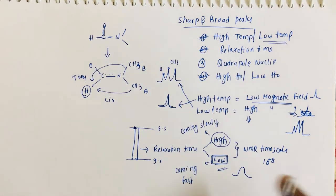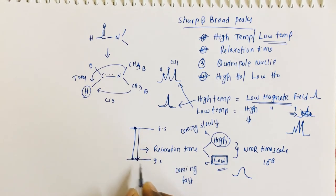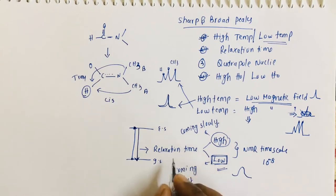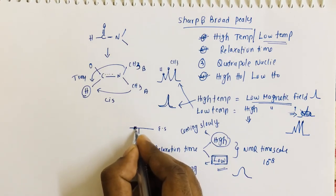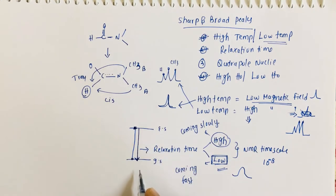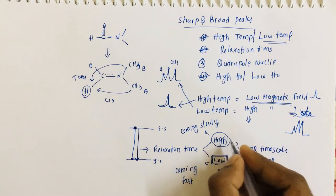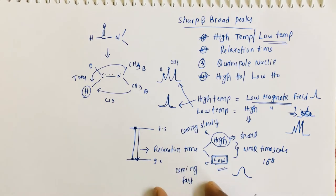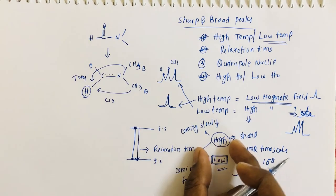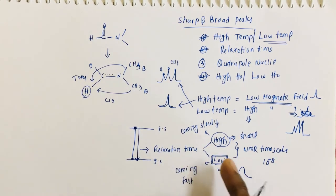If the molecule comes back immediately from the excited state to the ground state, we get broad peaks because the NMR cannot read the compound clearly. When the molecule spends some time in the excited state and then comes back to the ground state, the NMR can read the compound clearly and we get sharp peaks. So: low relaxation time gives broad peaks, and high relaxation time gives sharp peaks.